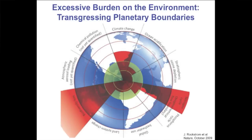Now let's look at the other end of our diagram. We take all that material and all that energy, use it, and then dispose of it back into the environment. We put pressure on the environment. Here's a very interesting chart that shows nine globally significant environmental problems that are ultimately all being caused by this rapid and massive increase in the amount of materials and energy that our economies use.